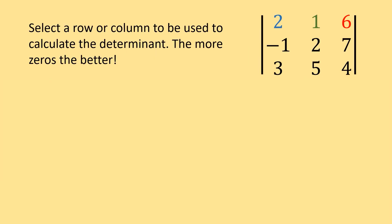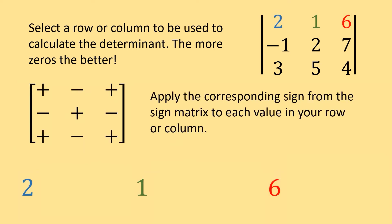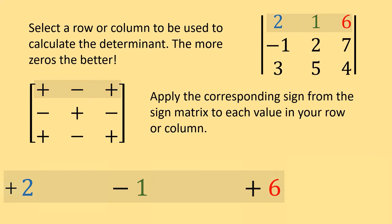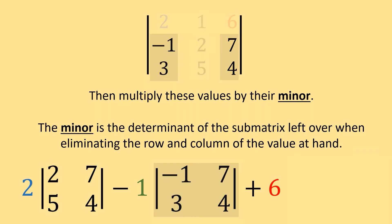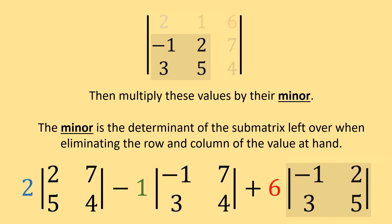Let's review the general process so we can work with bigger matrices than just 3x3. This process can be used for any n by n matrix of any size. First, select a row or column to use to calculate the determinant — generally, the more zeros the better. If you can find a column or row with a bunch of zeros, that's the one you want to select. Then find the sign to put with each value from the sign matrix — remember, the sign matrix always starts with positive in the upper left-hand corner and alternates positive and negative as you move left, right, up, or down. Then multiply each result by the minor of each value — the minor is the determinant of the submatrix left over when you eliminate the row and column of the value you're working with.